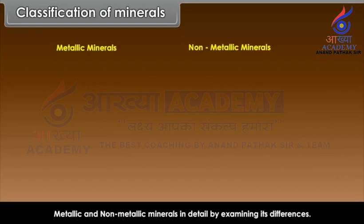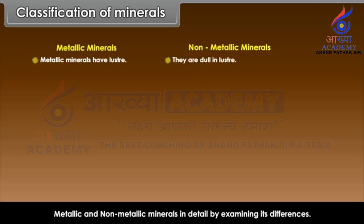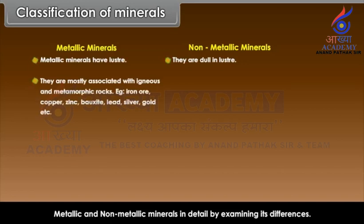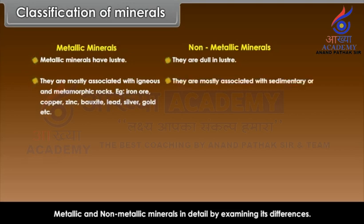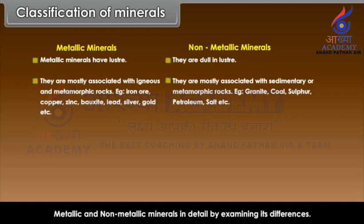Metallic minerals have luster, while non-metallic minerals are dull in luster. Metallic minerals are mostly associated with igneous and metamorphic rocks — examples: iron ore, copper, zinc, bauxite, lead, silver, gold, etc. Non-metallic minerals are mostly associated with sedimentary or metamorphic rocks — examples: granite, coal, sulfur, petroleum, salt, etc.